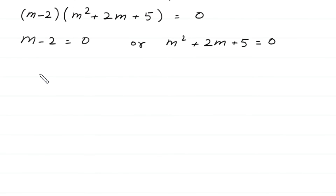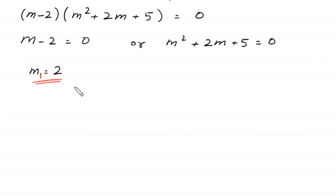From the first factor, m minus 2 equals 0, so m is equal to 2. This is the first value of m. Now, to find the other two values of m, we solve the quadratic equation m squared plus 2m plus 5 equals 0. This is not factorable, so we solve it by the quadratic formula.